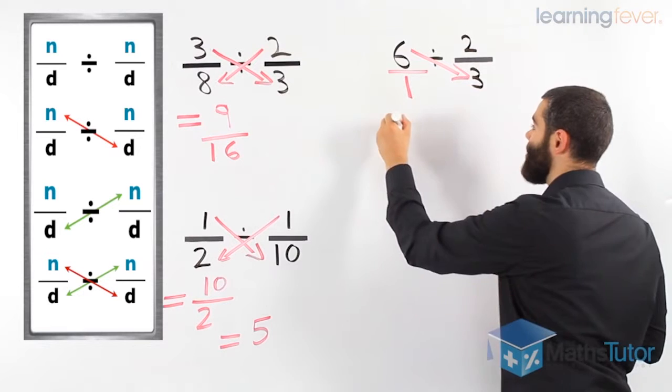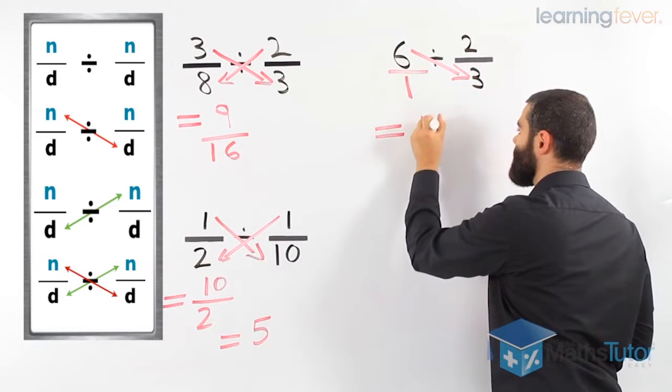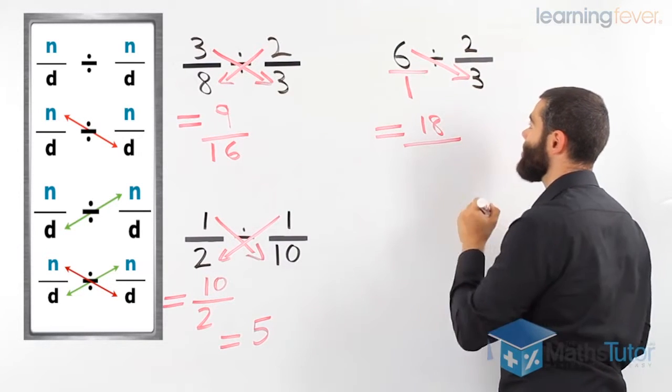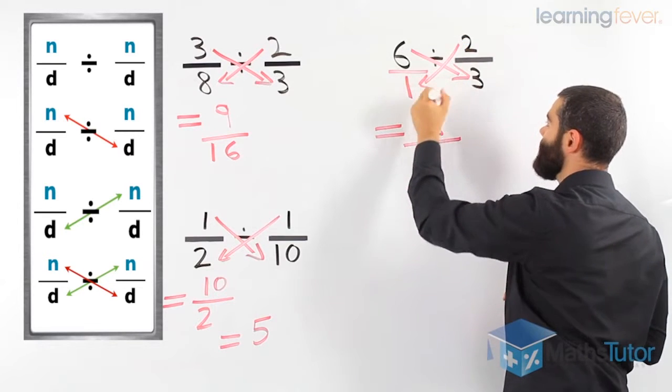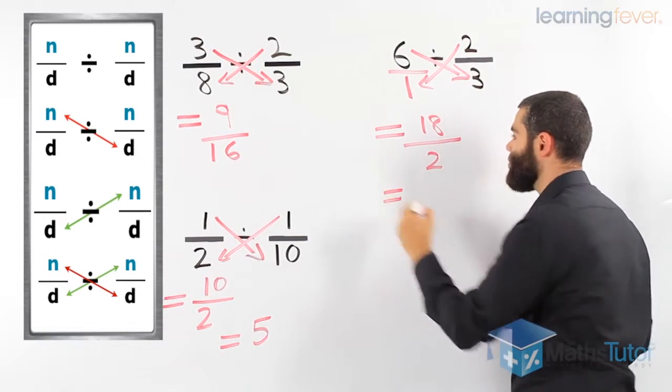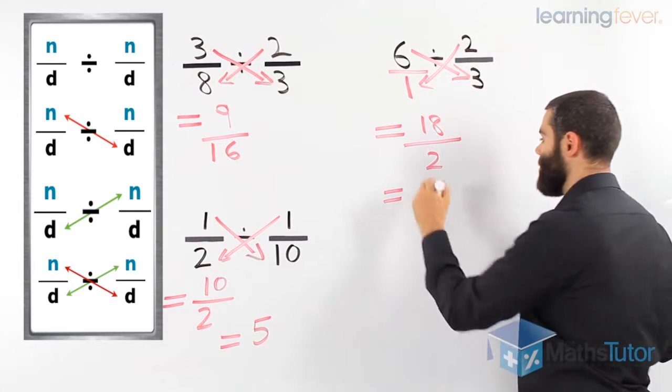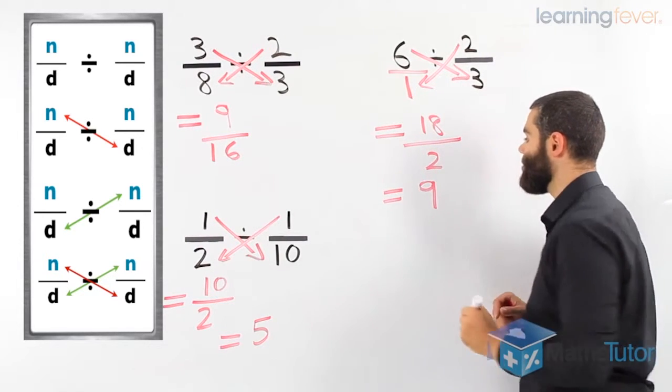Cross-multiply, 6 times 3, 18. And cross-multiply again, 2 times 1 is 2. And yes, we can simplify 18 over 2, our answer is 9.